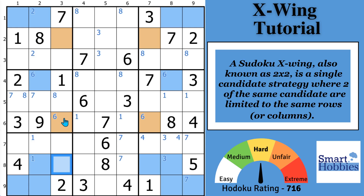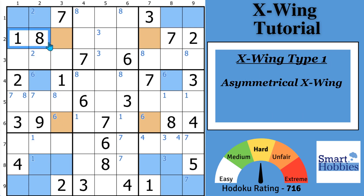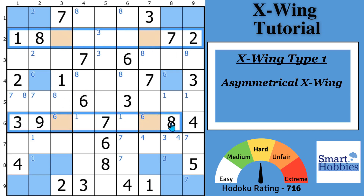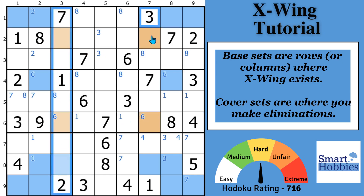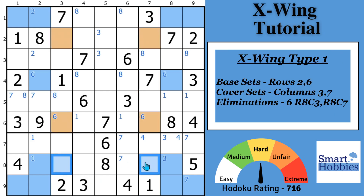This is the first type of X-Wing, called an asymmetrical X-Wing — that's when you can only see the X-Wing through one set, either the rows or the columns. In this case you have to use the rows to find it. These two rows, rows two and six, are called the base sets — that's where the X-Wing exists. Where you make the eliminations, columns three and seven, are called the cover sets. So you can remove a six from those two cells, because if you try to put a six there you'll break the puzzle.